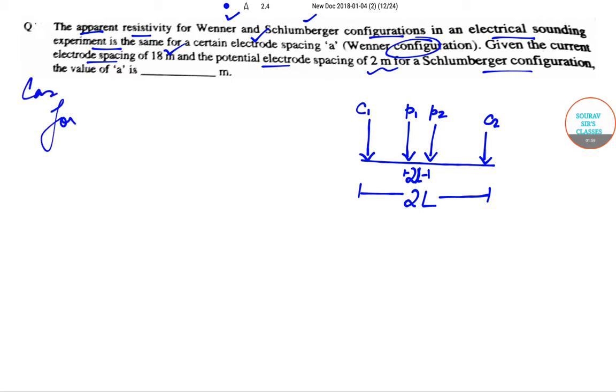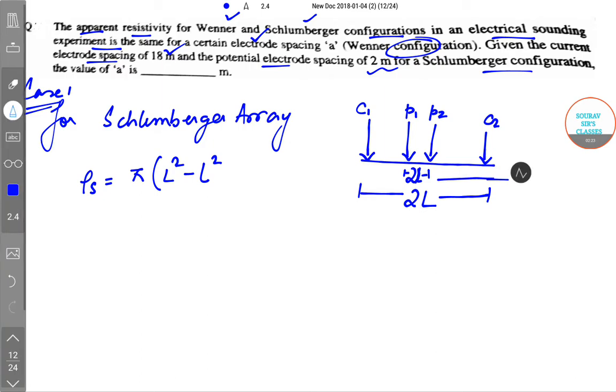For Schlumberger array, we have the formula: ρ_s = π(L² - l²)/(2l). So this one here is actually... I'll take another color so it will be convenient. This is actually l, the small l.